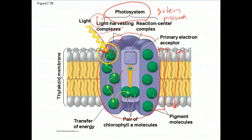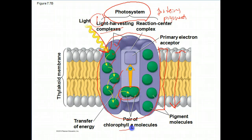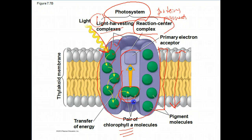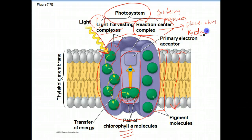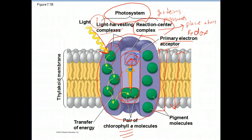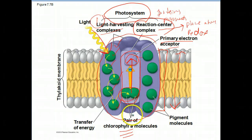It's essentially a wave of energy. This molecule is going to excite the neighbor, and eventually it's going to get to a specialized pair of chlorophyll A inside the reaction center complex. The reaction center complex is the place where redox reactions occur. It's only the chlorophyll A molecules that are going to pass their electrons from the specialized pair to what's called the primary electron acceptor. These chlorophyll A's are being oxidized by giving their electrons to the primary electron acceptor, and the primary electron acceptor is being reduced.